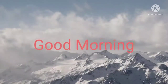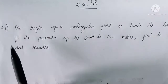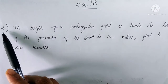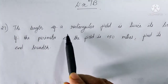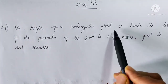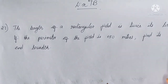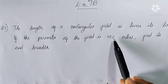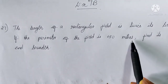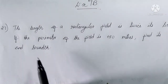Very good morning all of you. We are continuing exercise 7P. Today we are starting by question number 27. The length of a rectangular field is twice its breadth. If the perimeter of the field is 150 meters, find its length and breadth.